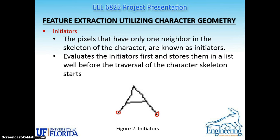For the character geometry recognition we have some initiators, some intersections, and minor initiators. Initiators are the pixels that have only one neighbor in the skeleton of the character. This evaluates the initiators first and stores them in the list well before the traversal of the character skeleton starts. In the figure we have shown the initiator for the alphabet A, where it can be seen that both starts are from the bottom. From this, once we start the traversal, it stores these two initiators first.